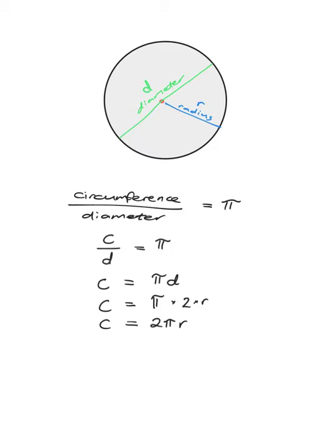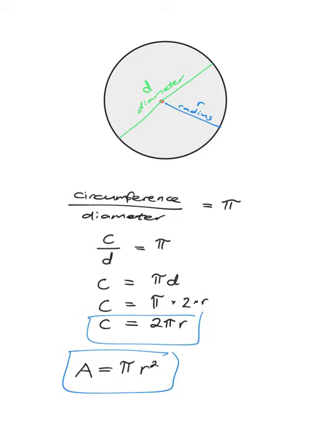The ancients who figured out that circumference over diameter equals pi also came up with this formula: the area of a circle is pi multiplied by the radius squared, A = πr². So these two formulae are the very important ones you need: circumference is 2 times pi times r, and area is pi times r squared. Remember, r squared is just r times r.